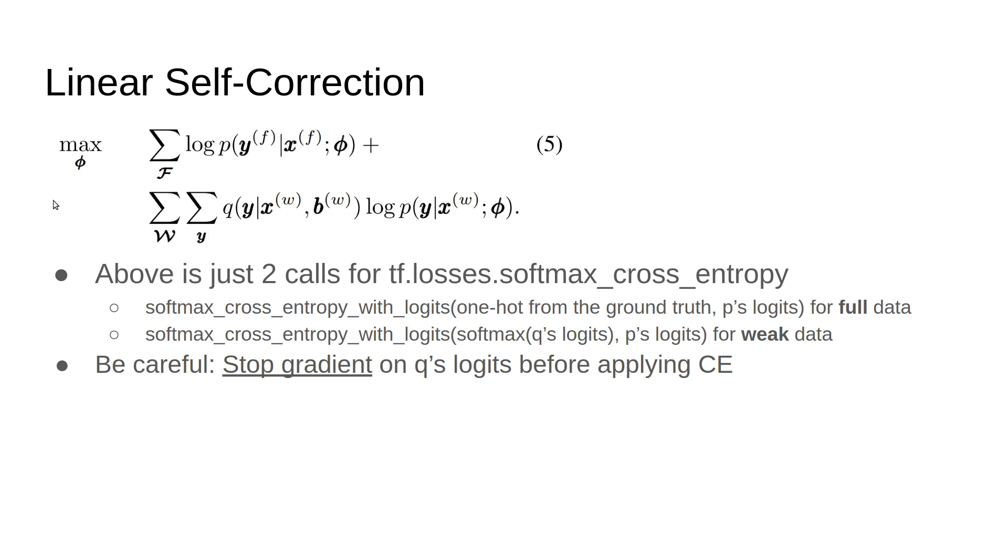In the paper, you'll notice we have such minimization or maximum likelihood maximization, but don't be scared. This is as simple as two lines of code cross-entropy. One would be the full logits—the logits from the current network with one-hot encoding for ground truth. For the weak data, it would be the logits coming from the network with softmax over the queues of the logits. Implementation-wise, you should be careful about the queue logits to not let gradients go through it, so you need to do some stop-gradient.